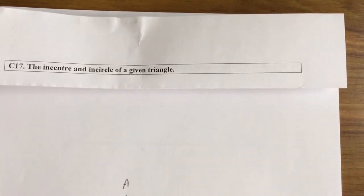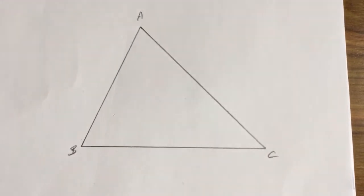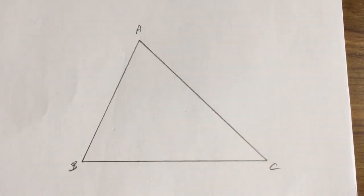Construction 17: How to draw the incenter and incircle of a given triangle. So what you will have is a triangle given to you, in this case triangle ABC, and our job is to locate the center called the incenter and to draw the incircle.